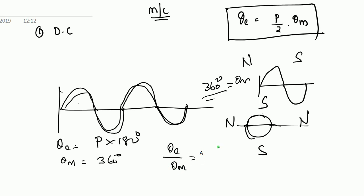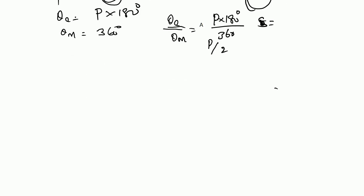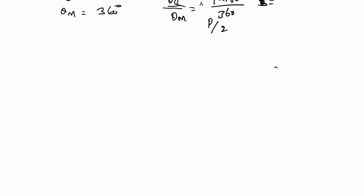Theta-mechanical is equal to P into 180 by 360, which gives P by 2. So, theta-electrical is equal to P by 2 into theta-mechanical. This formula is the main one for DC machines.